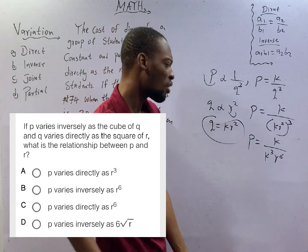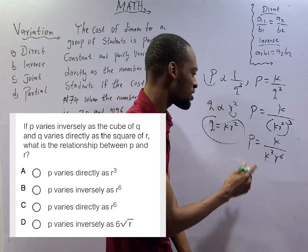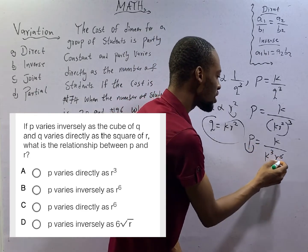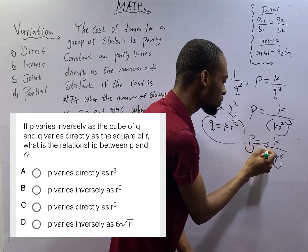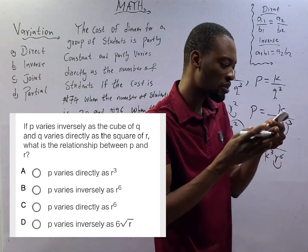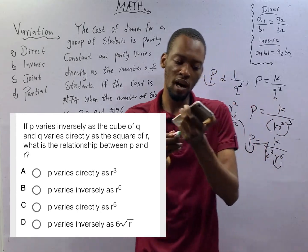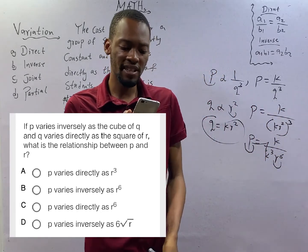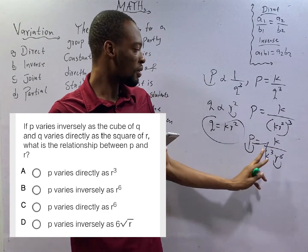Now we don't really care about every other thing. What we are concerned about is the relationship between P and R. If you look at this, P is inversely proportional to R raised to the power of 6. P varies inversely as R raised to the power of 6. That is the relationship between them.